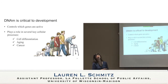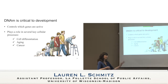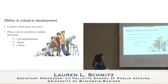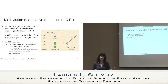DNA methylation is really critical to development — it controls which genes are active in the body. It also plays a role in several key cellular processes, including cell differentiation, whether a cell is a muscle cell, a neuron, or a white blood cell. It also plays a huge role in aging, which we'll discuss later, and cancer. What actually influences DNA methylation? It's influenced by both environmental factors, which is of huge interest to social scientists, but also genetic factors — so it's both environmentally and genetically influenced.